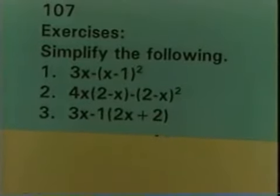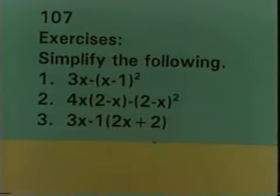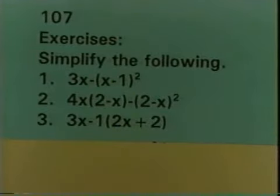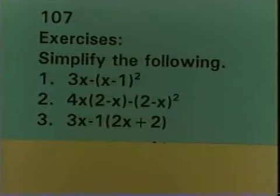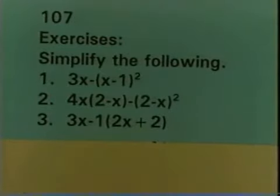Now it's time for you to check your understanding. Follow the normal procedure: copy down the exercises, stop the tape, work the exercises, then restart the tape to check your answers. The first one: 3x minus the quantity x minus 1 squared. The second one: 4x times the quantity 2 minus x, minus the quantity 2 minus x squared. The third: 3x minus 1 times 2x plus 2. Be sure to note that 3x minus 1 does not have parentheses around it.